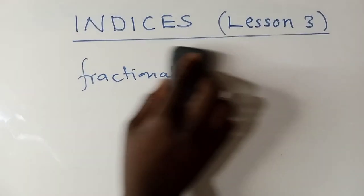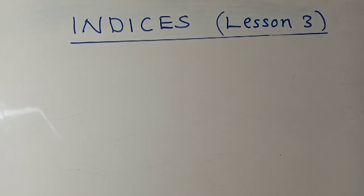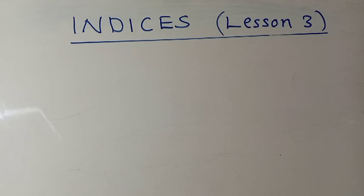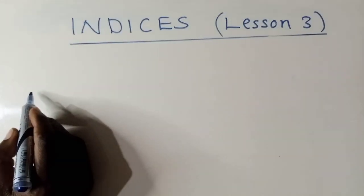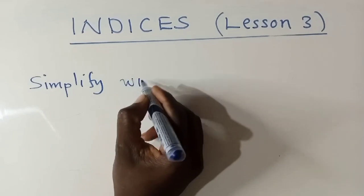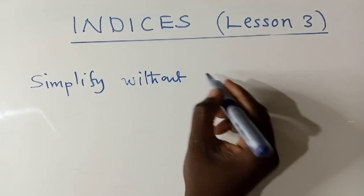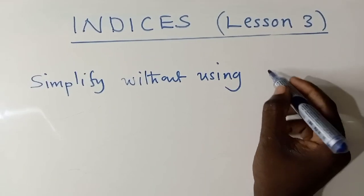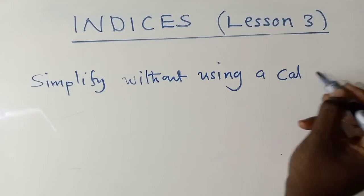Let me give you an exercise. You should be writing this down. There is one question. The first person to comment the correct answer and send a message to my WhatsApp number joins my online tuition class for free. I'll put the number at the end. Make sure you have your paper and pen ready. You are not allowed to use a calculator — simplify without using a calculator.